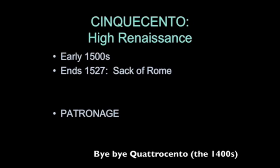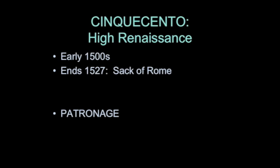As we look at the papacy of Julius, we're talking about the cinquecento — bye bye quattrocento. Cinque is Italian for five, and cinquecento simply means the 1500s. The 1500s associated with the High Renaissance are the first couple of decades. Because by 1527 there is a great political upheaval, Rome is sacked, the Pope goes into hiding, and pretty much the Renaissance falls apart at that moment. But during these glorious first couple of decades of the 1500s, you have this amazing flourishing of art, quite a lot of it sponsored by the patronage of Julius.